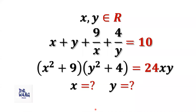Hello, I'm Dr. Wen. Here is the question. If x and y are real numbers such that x plus y plus 9 over x plus 4 over y equals 10, and x squared plus 9 times y squared plus 4 equals 24xy, what are the values of x and y?